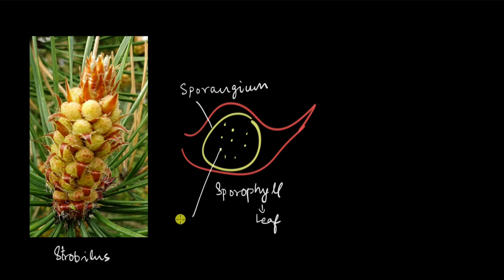Each of these tiny things are the spores. Now there's one thing you have to keep in mind: the male spores are always microspores, because they are much smaller than the female ones. So this here is a microspore, and this is male.